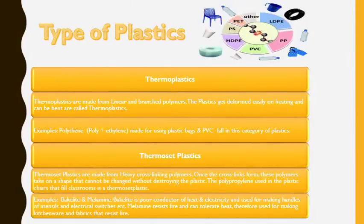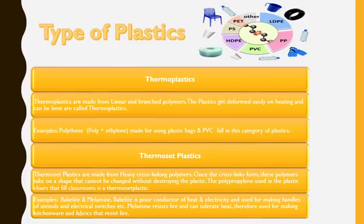There are two kinds of plastics: thermoplastics and thermosetting plastics. Thermoplastics are made from linear and branched polymers and can be easily deformed by heating or bent. Examples include polythene bags and PVC items used on a daily basis. Thermoset plastics are made from heavy crosslink polymers, and once these crosslinks are formed, the polymers take a shape that cannot be changed without destroying the plastic. A good example is the plastic chair in your classroom, made of polypropylene.